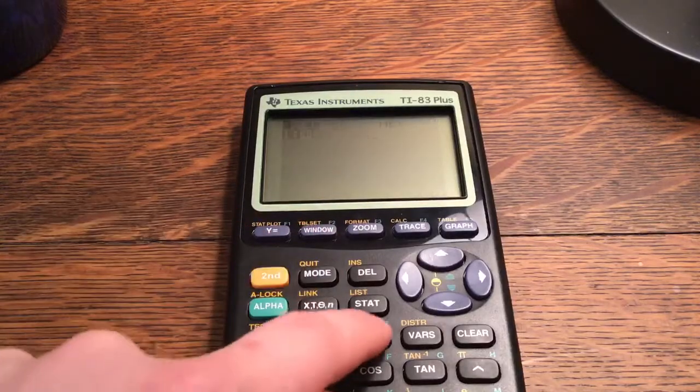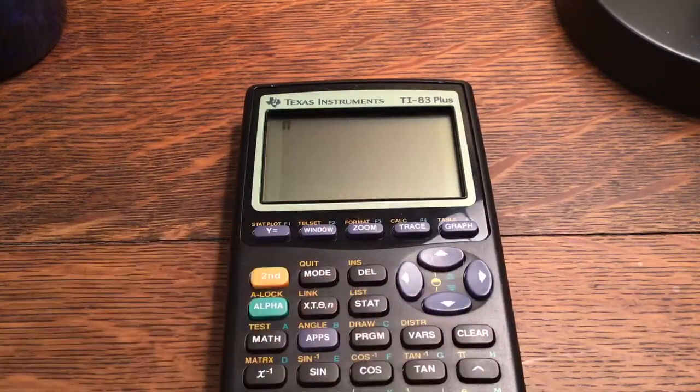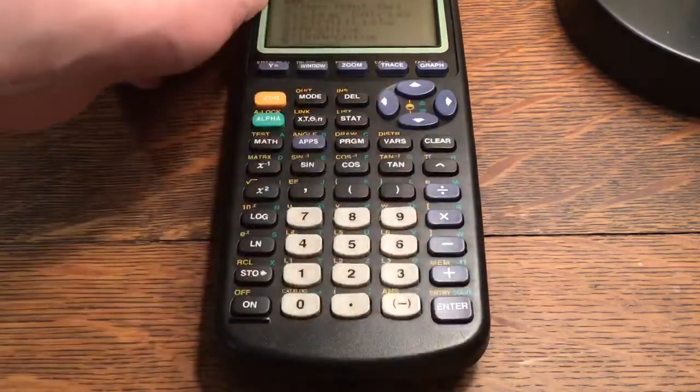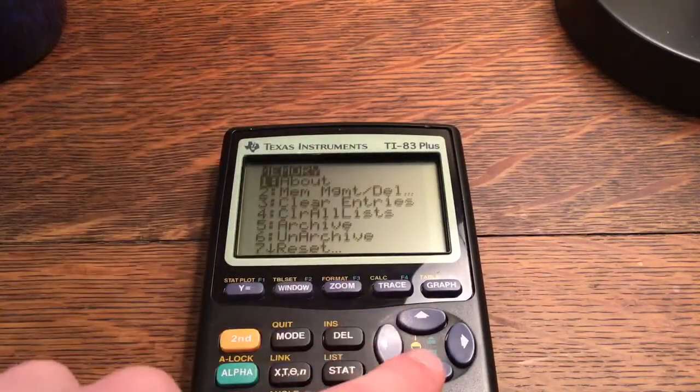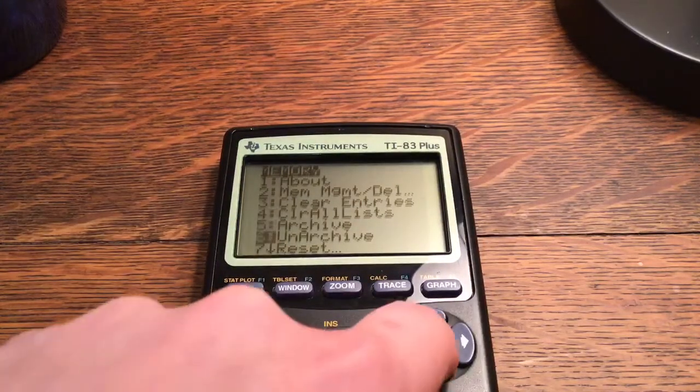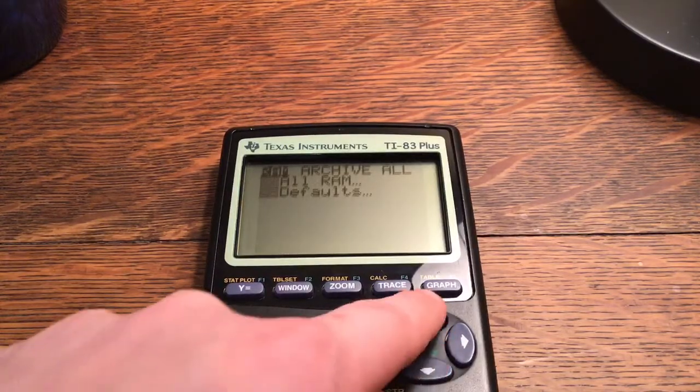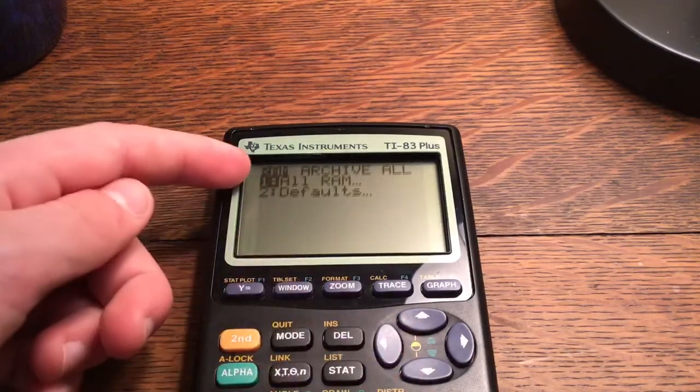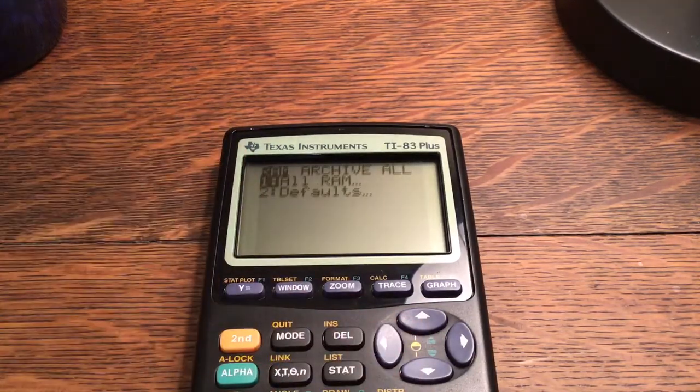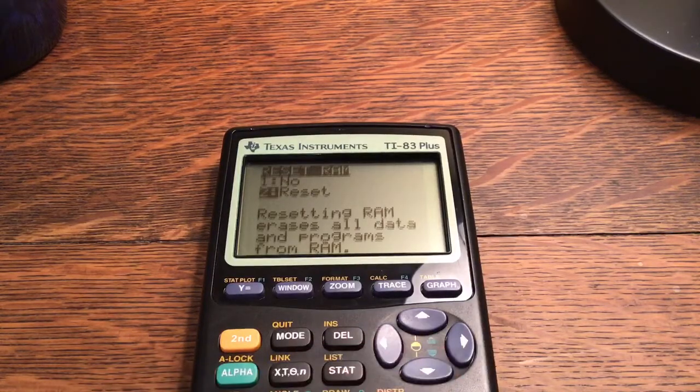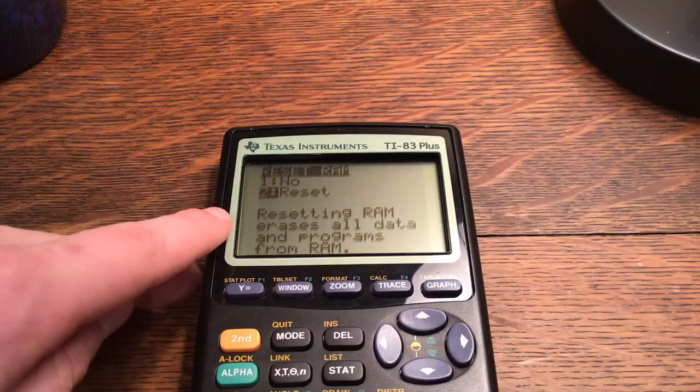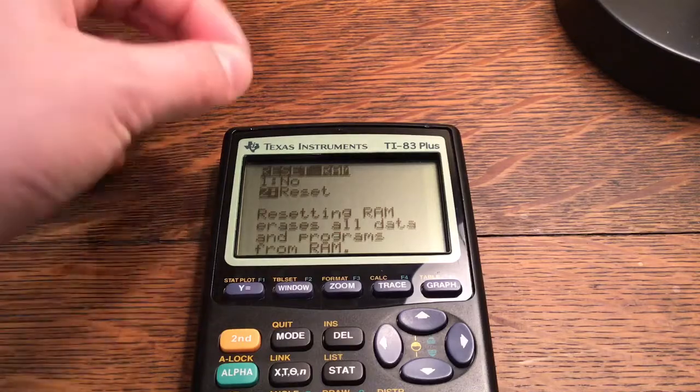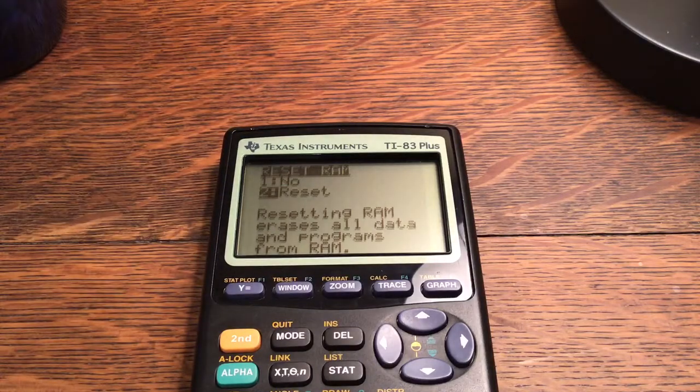I'm going to go second quit, then second mem, which is right here, memory, which is also the plus button. Then you're going to go into reset. Do not do all memory because that will clear all your stuff. What you're going to do is RAM, all RAM. You're going to click enter. You're going to go to reset. And it says resetting RAM erases all data and programs from RAM.